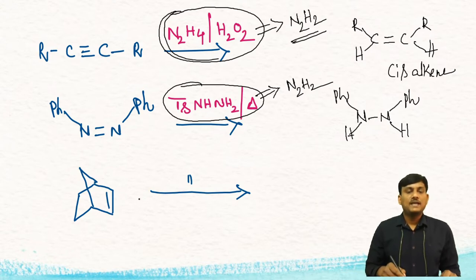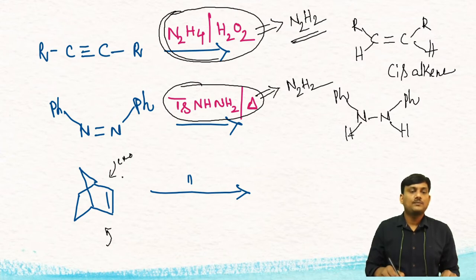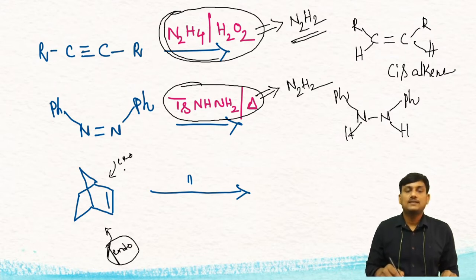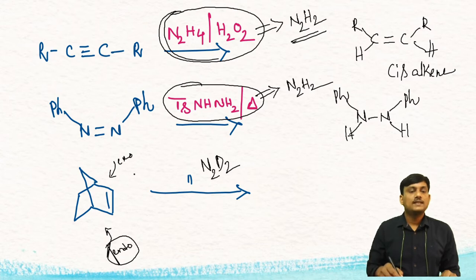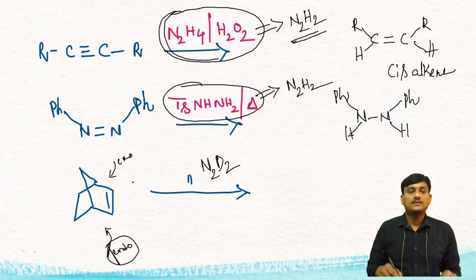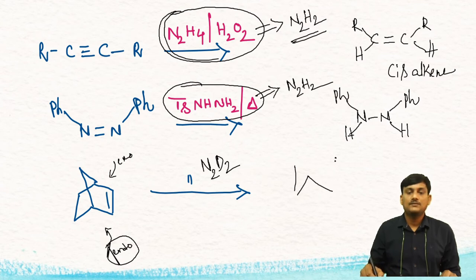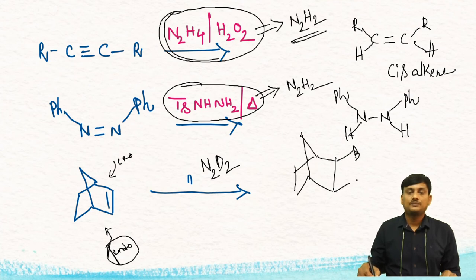Suppose you take a bicyclic compound — this has an endo face and an exo face. The endo face is sterically hindered, but the exo face is less sterically hindered when compared with the endo face. So when you take N2D2, there is a syn addition of two deuteriums from the exo side, since the exo side is less sterically hindered compared with the endo side. So there is a formation of the exo addition product.